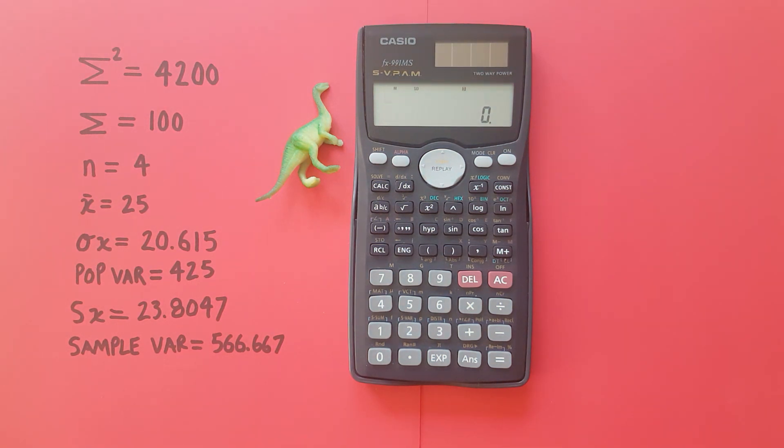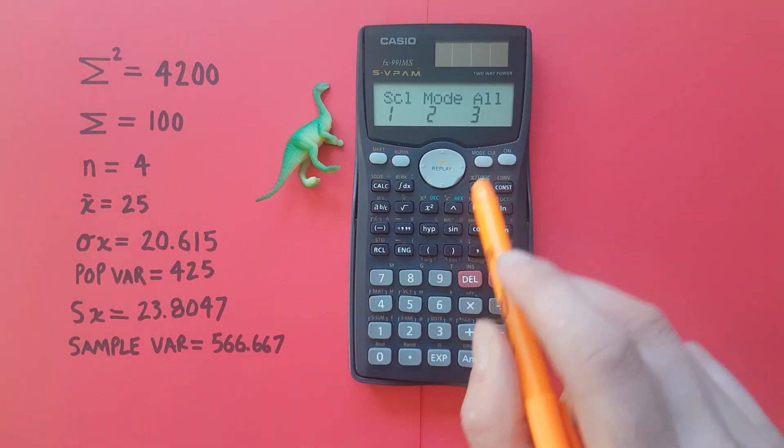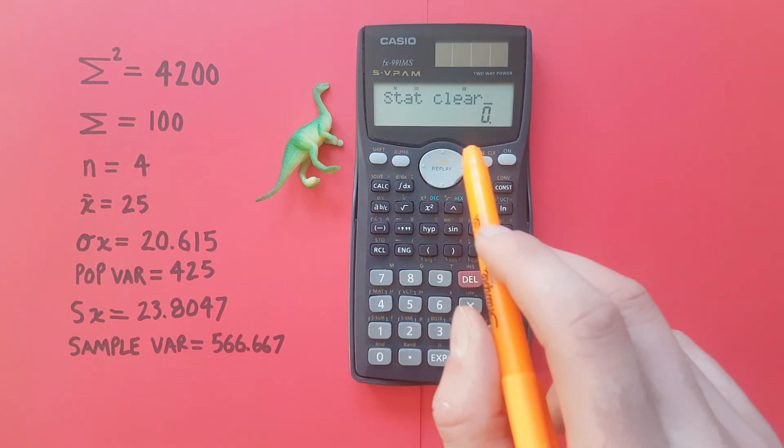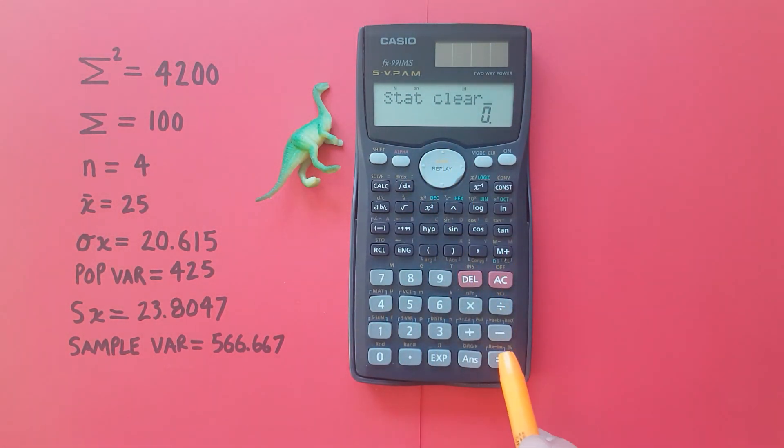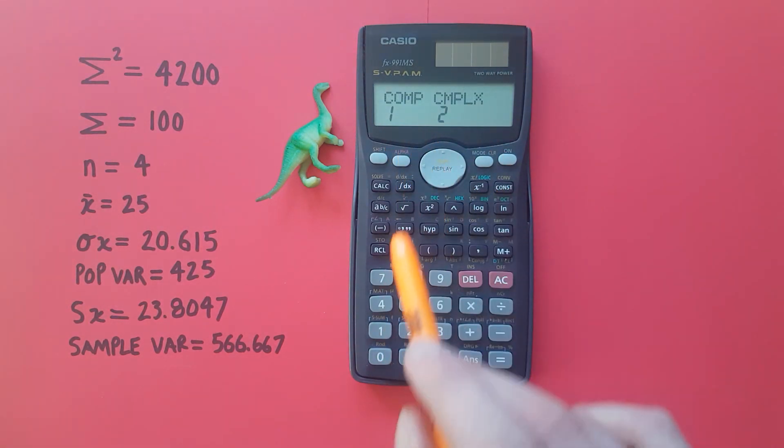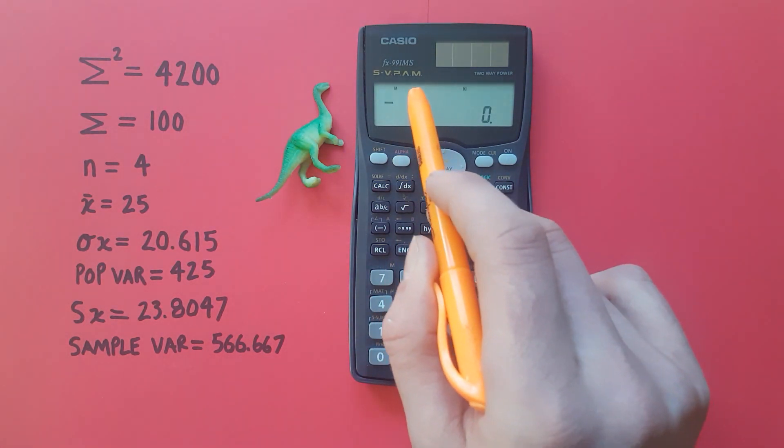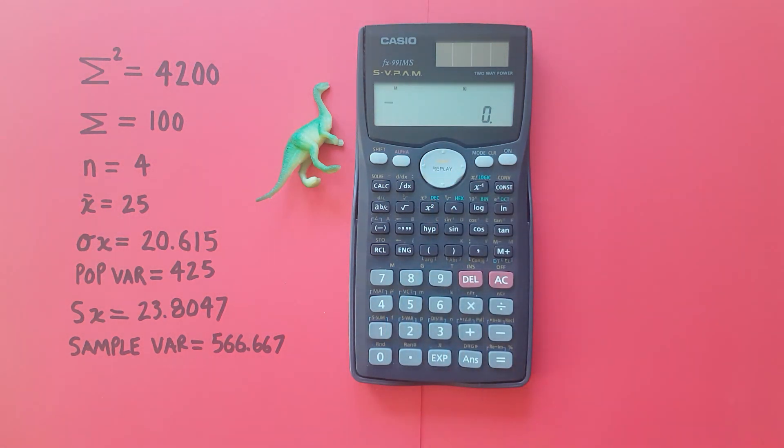Once we're done doing all our statistical calculations, it's a good idea to clear our data set pressing shift mode 1. Once we're sure we don't need this data set anymore press equals. And then when we're ready to go back to our normal calculations we press mode mode and 1 which is our normal computations mode. You can see the SD has disappeared from the top of our screen and we're ready to return to normal calculations.